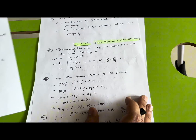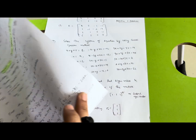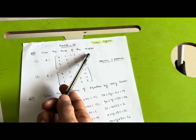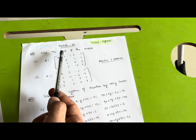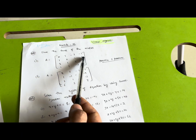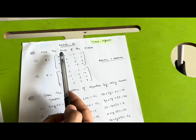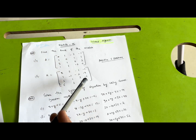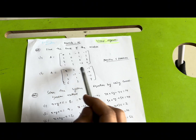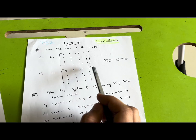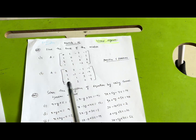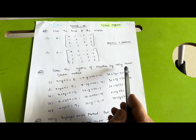Now coming to Module 5, which is again a passing module. First topic: rank of a matrix — a very easy topic you already have knowledge of from 11th and 12th class. Find the rank of the given matrices. I have made detailed videos on rank of matrix and will provide the link in the description box. Practice five problems on this rank of matrix concept and you can easily grab seven marks. Next, solve the system of equations by using Gauss-Jordan method.